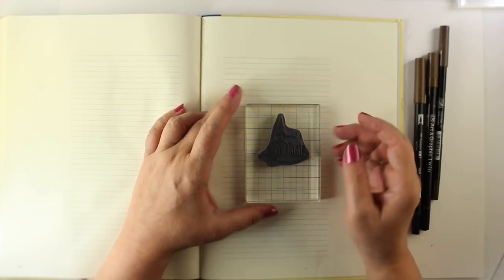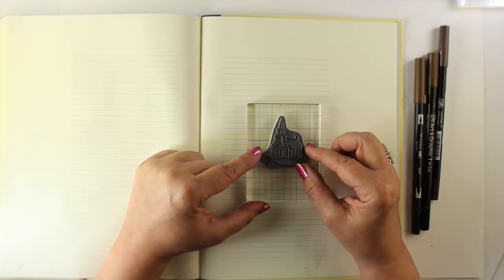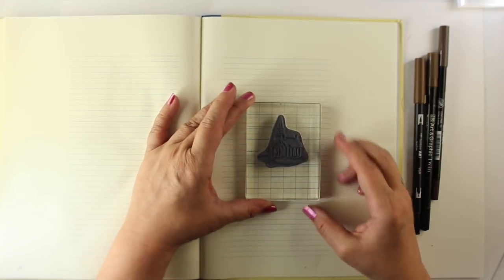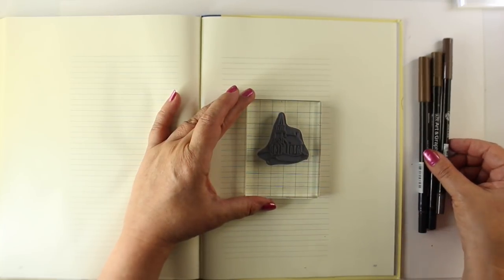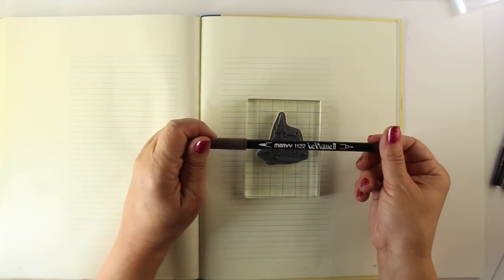So we're going to stick it onto an acrylic block. This one has a grid, which is going to help me to get things straightened. I can place this so that the church is upright, and then when I stamp it, I can just use the side of the page or lines on the page to line that grid up and make it straight.